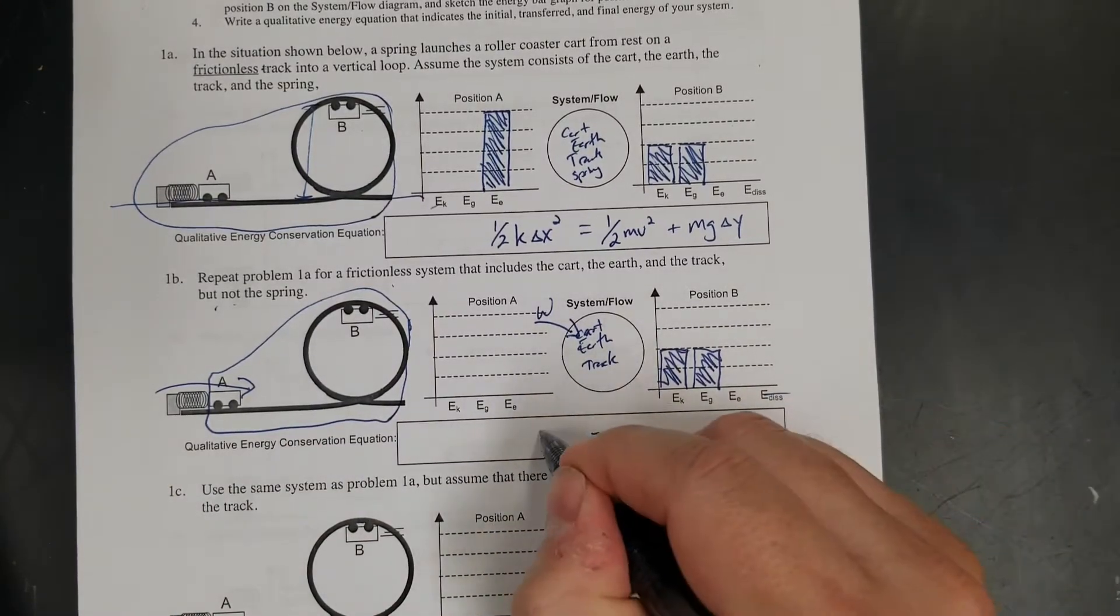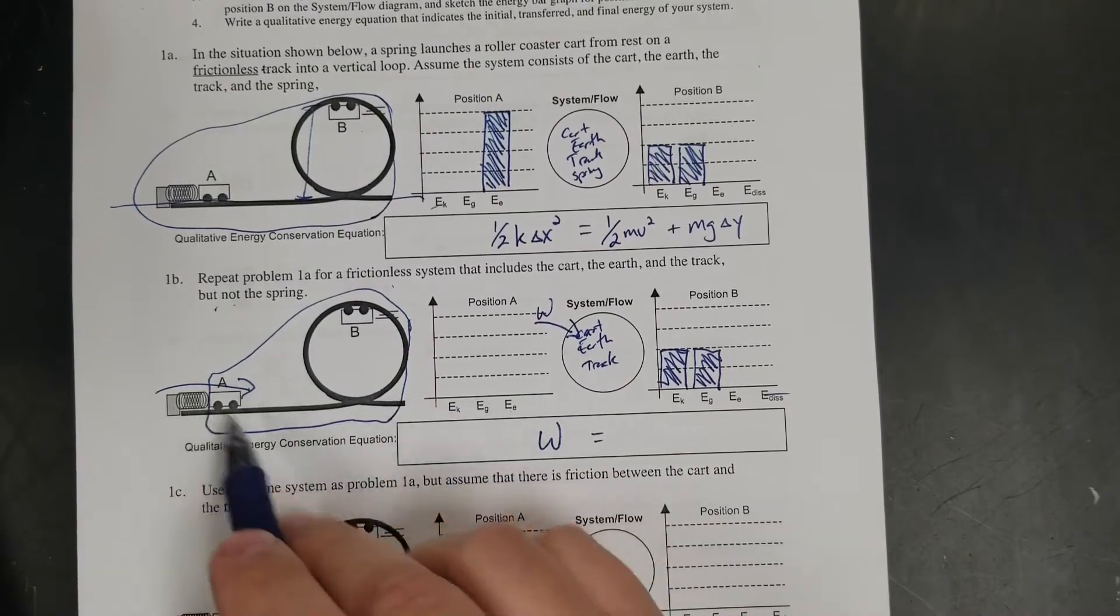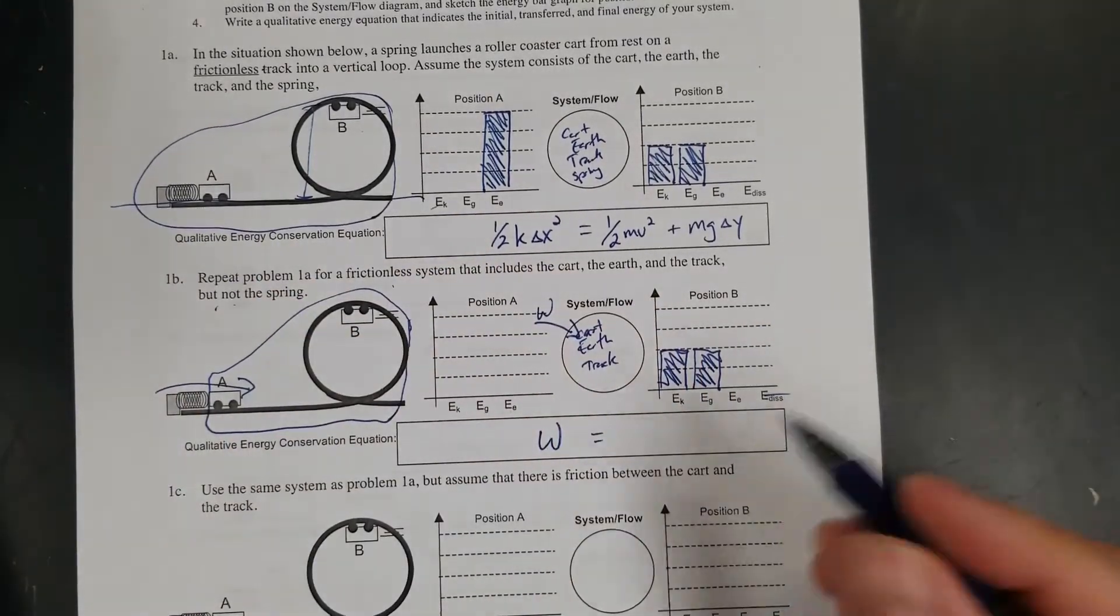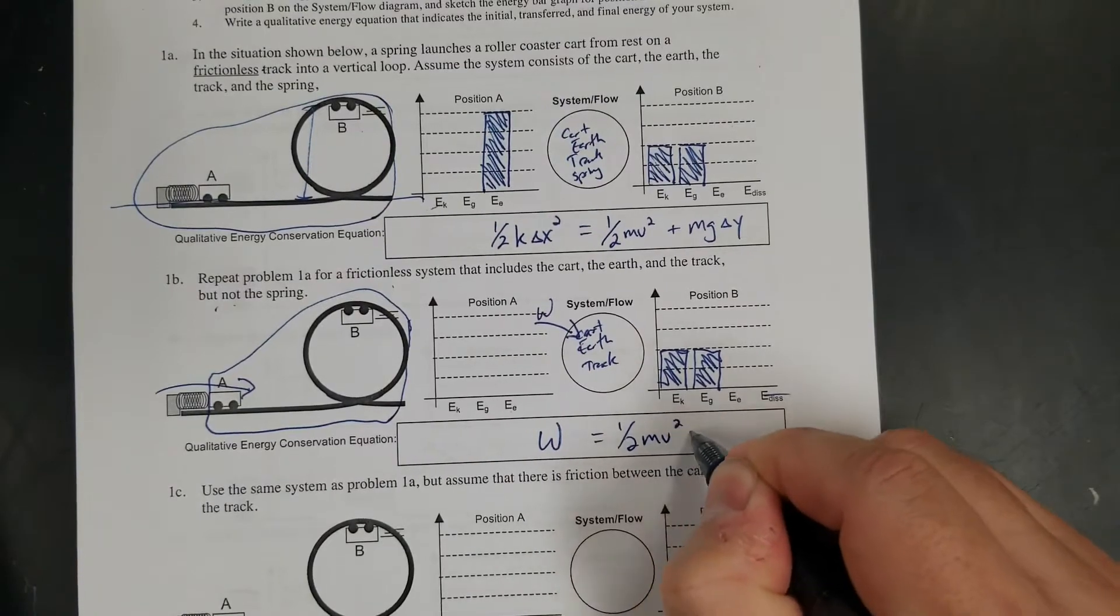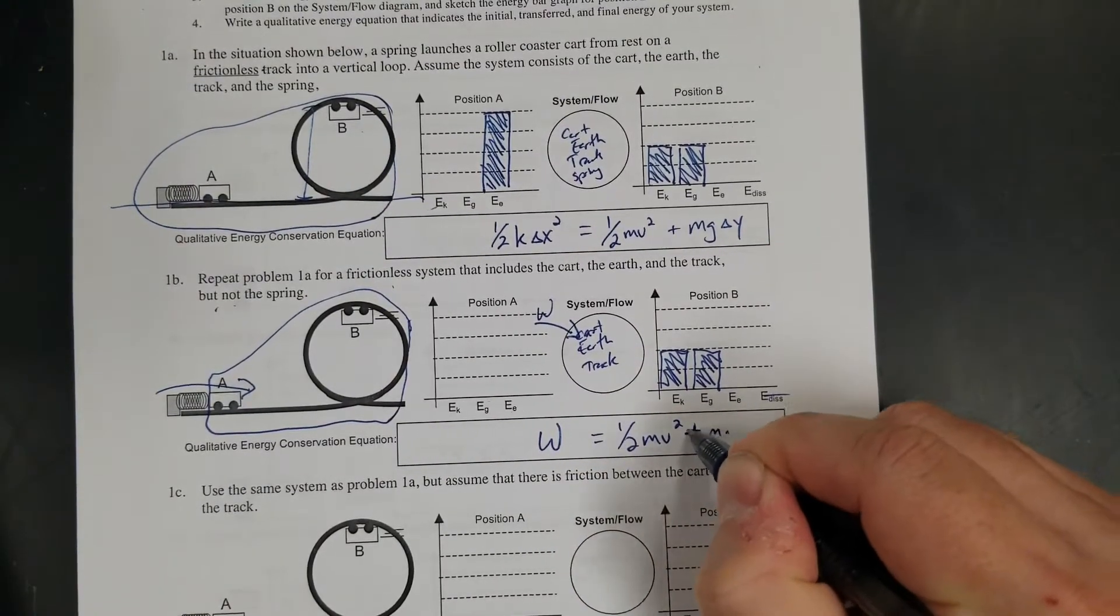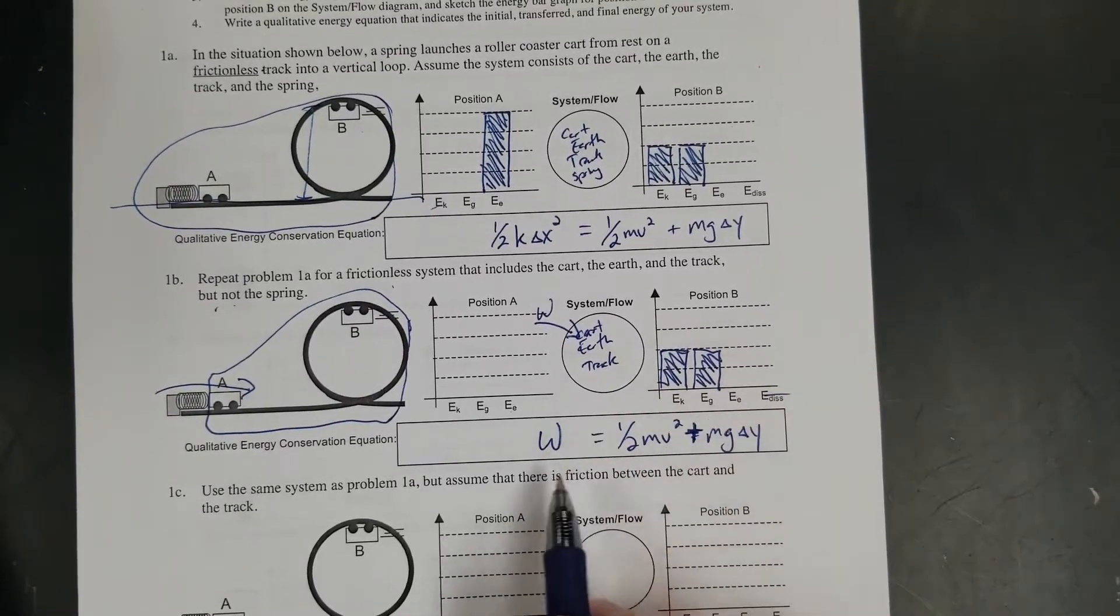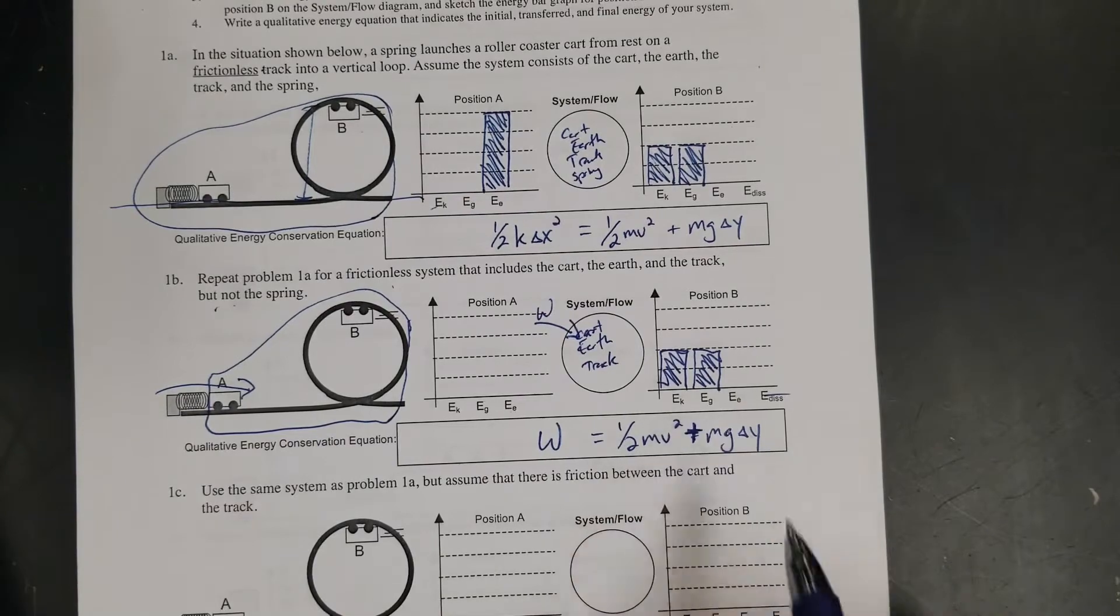My equation is going to be work equals - there's no kinetic at the start, there's no gravitational. It's the same as this one, except I just took the spring out of the system. So one-half mv squared plus mg delta y. Work equals the kinetic energy plus the gravitational potential.